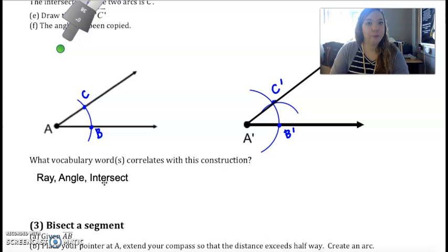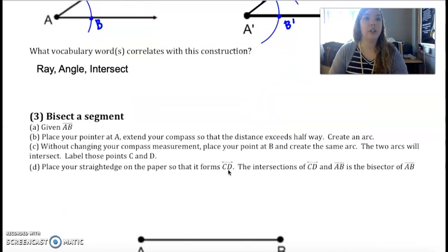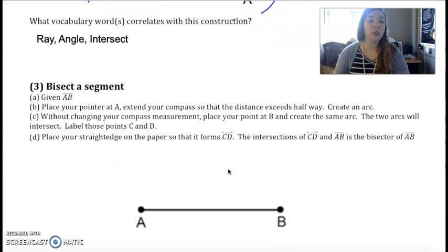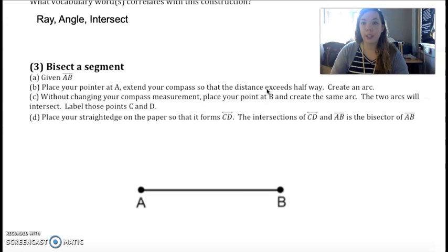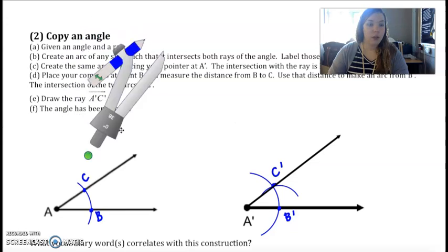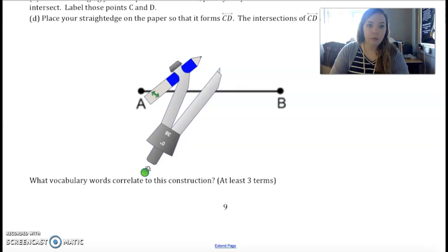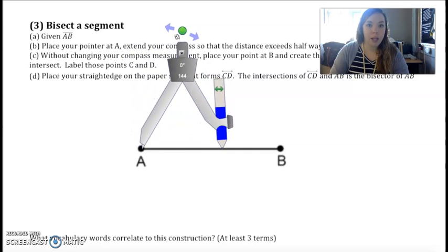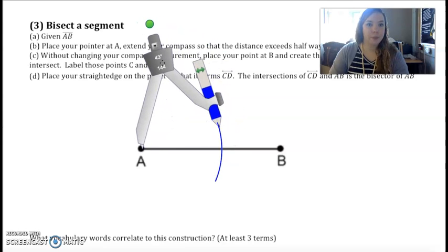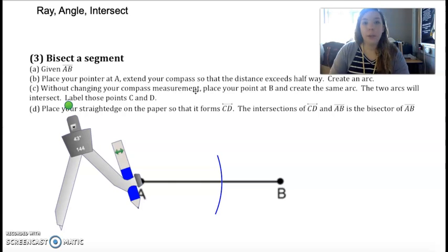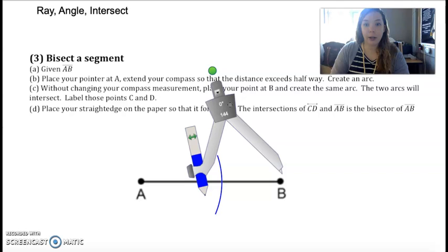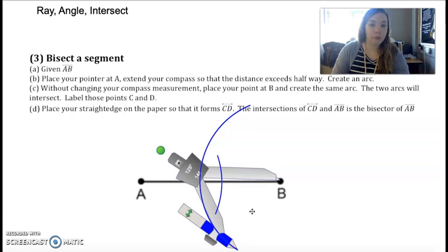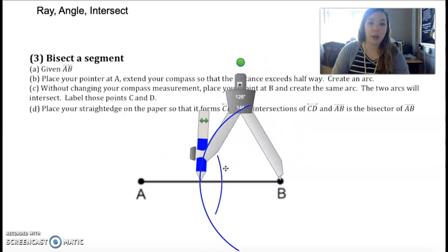Bisect a segment. We learned in our geo basics unit that bisecting means that we're dividing something into two equal pieces. Given A and B, place your pointer at A and extend your compass so the distance exceeds halfway, so more than halfway. I want this to be more than half, but anywhere more than half should work. I'm going to make an arc. Without changing your compass measurement, don't change it at all, place your point at B and create the same arc. I'm just going to flip this around but I haven't made it any bigger or smaller. I didn't make my first arc big enough, so you want to make sure they are.